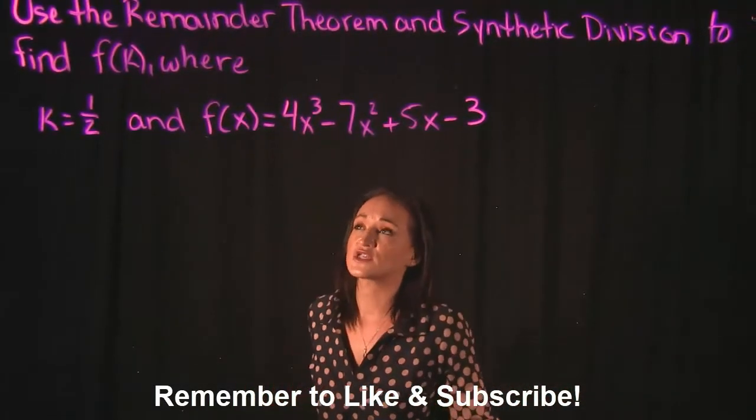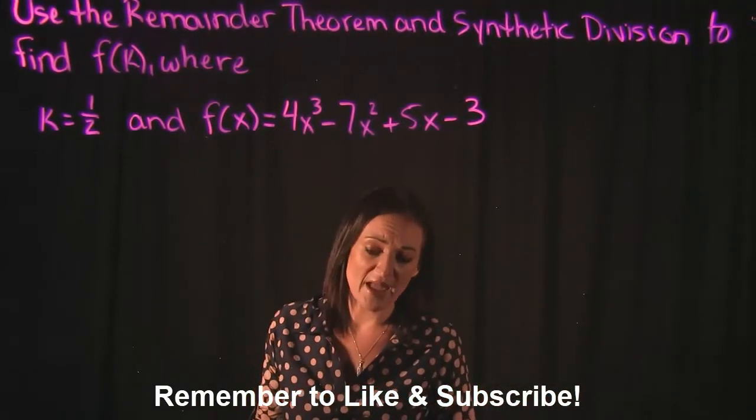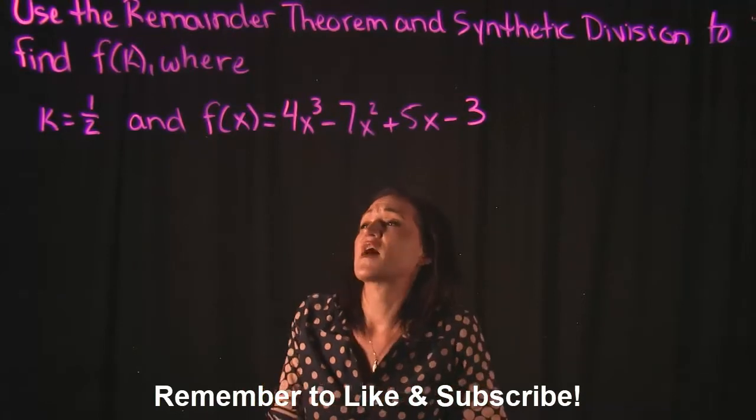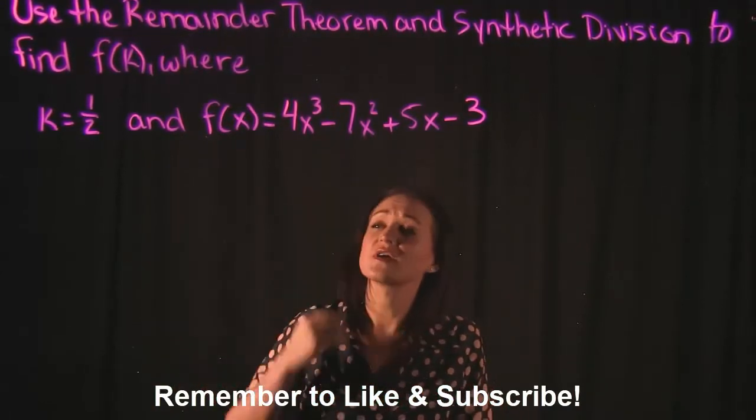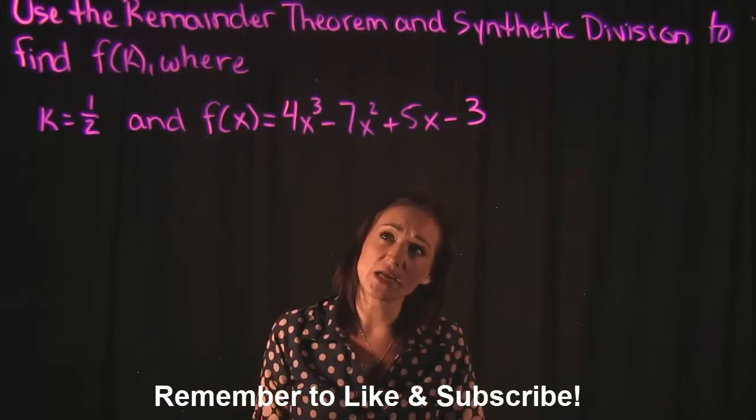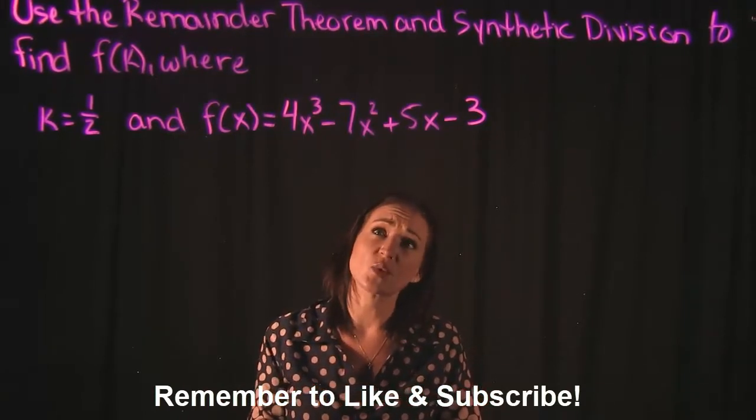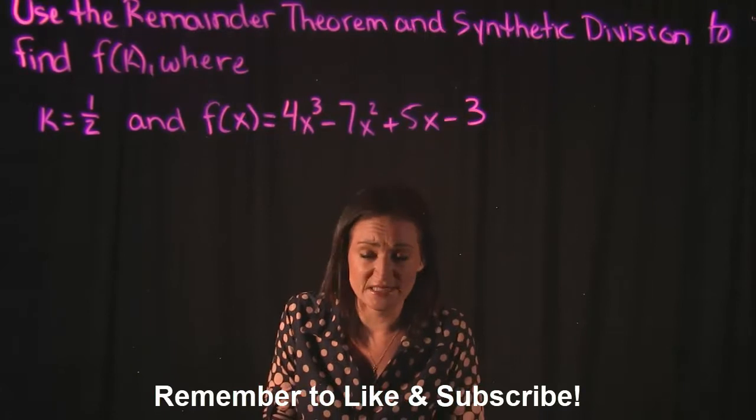So for this video our instructions say to use the remainder theorem and synthetic division to find f of k where k is equal to 1 half and f of x is equal to 4x cubed minus 7x squared plus 5x minus 3.